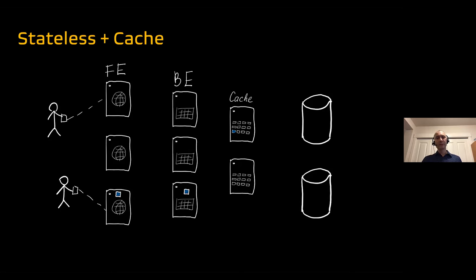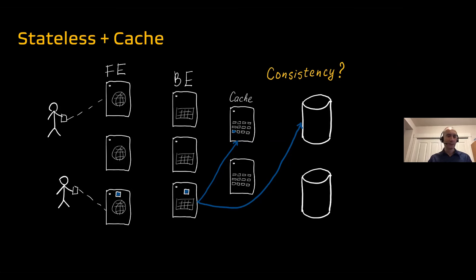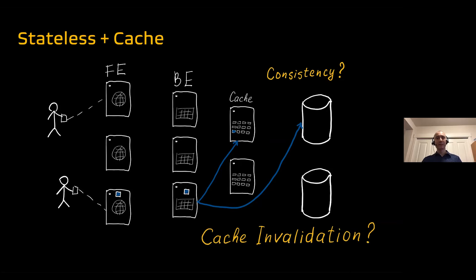The problem starts when we need to write back. We updated the entity and now need to change its state in the persistent store. But what about the state in the cache? How do we update both consistently? There's the old saying that there are two hardest problems in distributed systems: naming things and cache invalidation. So we are dealing with cache invalidation. My argument — and others' — is that this moves us toward building stateful systems.